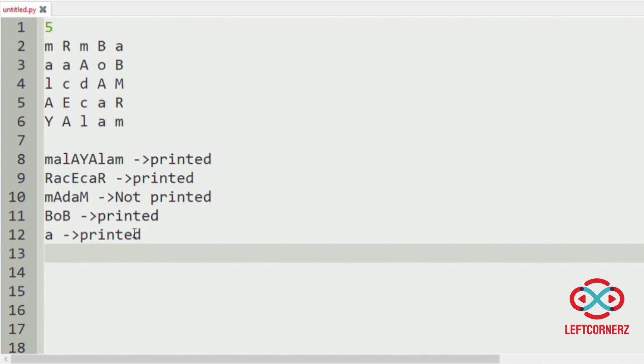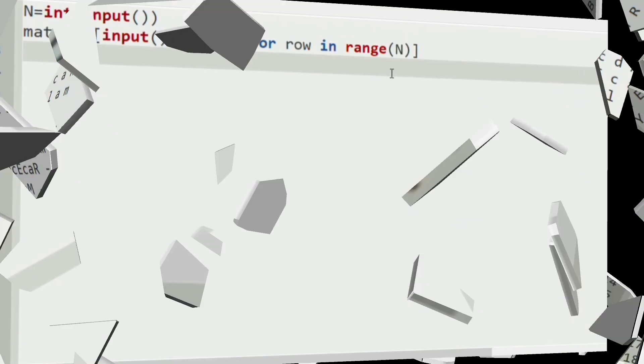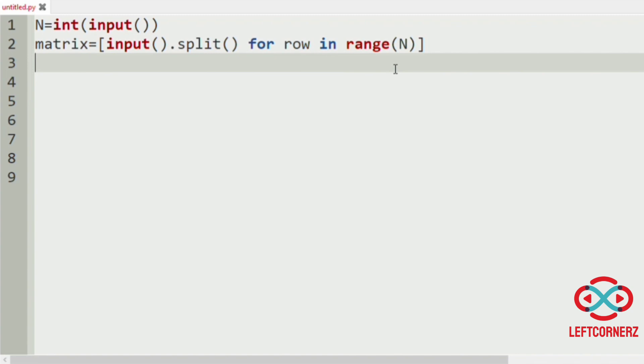Now let us implement our program. First we will get our inputs. We will get the number of rows and columns and our character matrix using this comprehension.